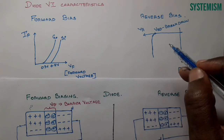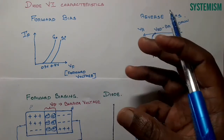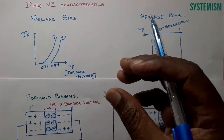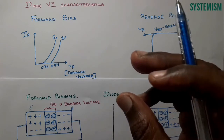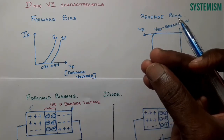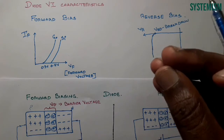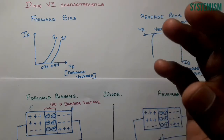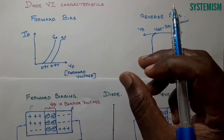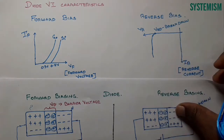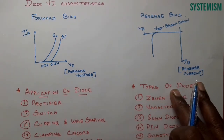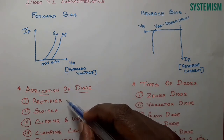Now we need to know about the applications of the diode and the different types of diodes. A diode has applications in all areas — you can buy a diode for just 50 paise, but with it you can build circuits and sell them for a much higher price. The main application of a diode is as a rectifier.